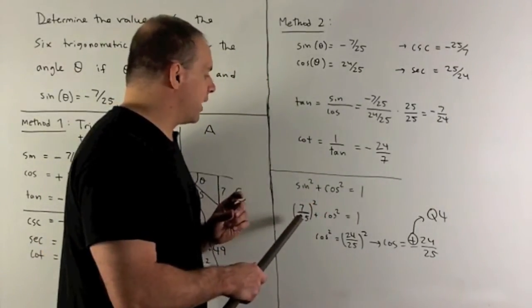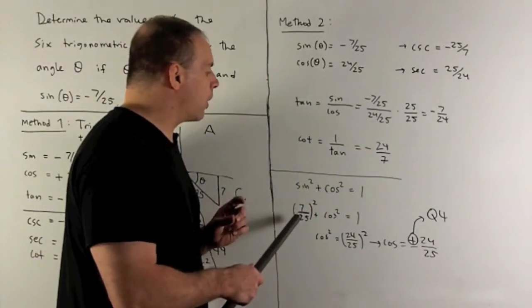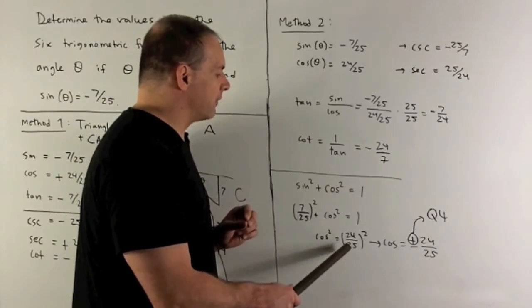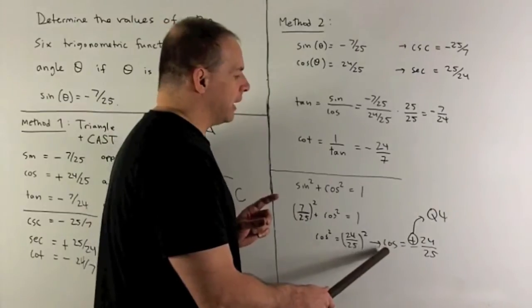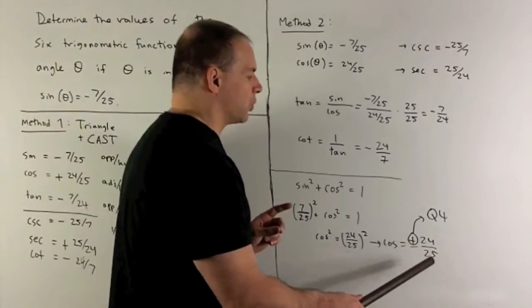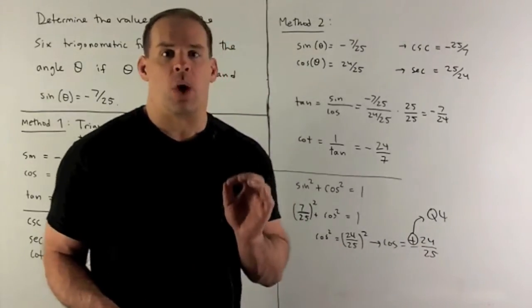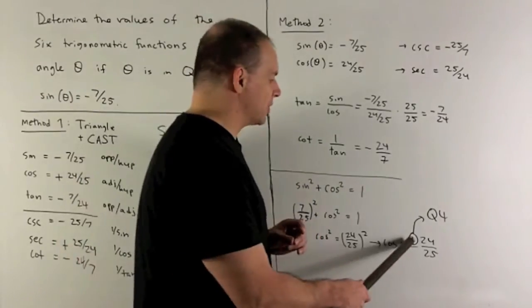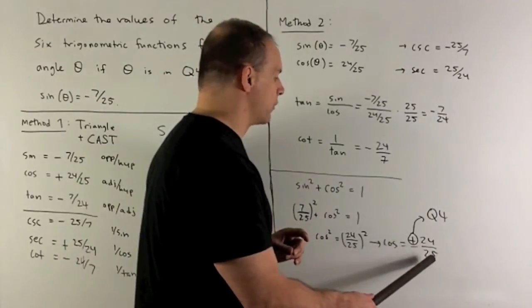So by using that, I'm going to put in our 7 25ths. We'll square it, so the sign will go away. Then I'll have cosine squared is equal to 24 over 25 squared. Cosine could be plus or minus 24 over 25. Since I'm in quadrant four, the cosine is going to be positive, so we use positive cosine. So plus 24 over 25.